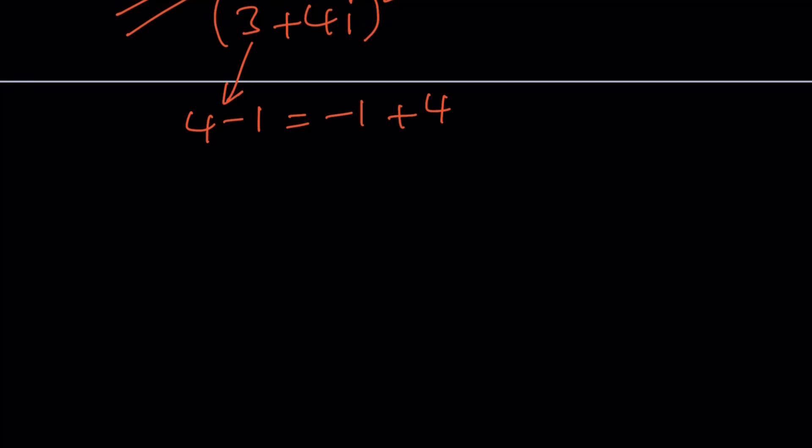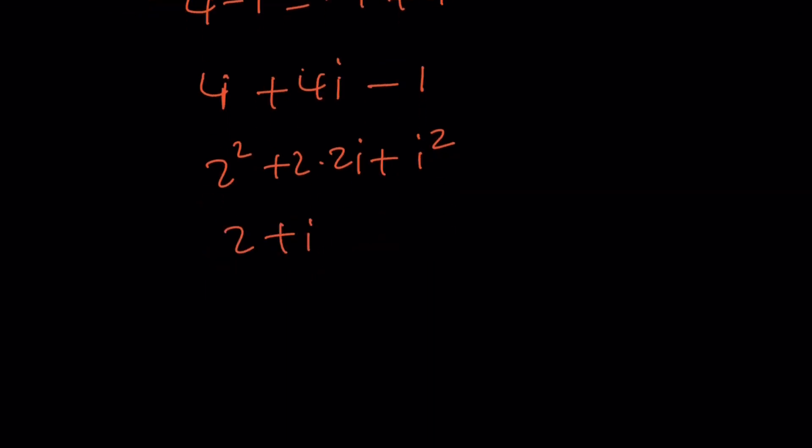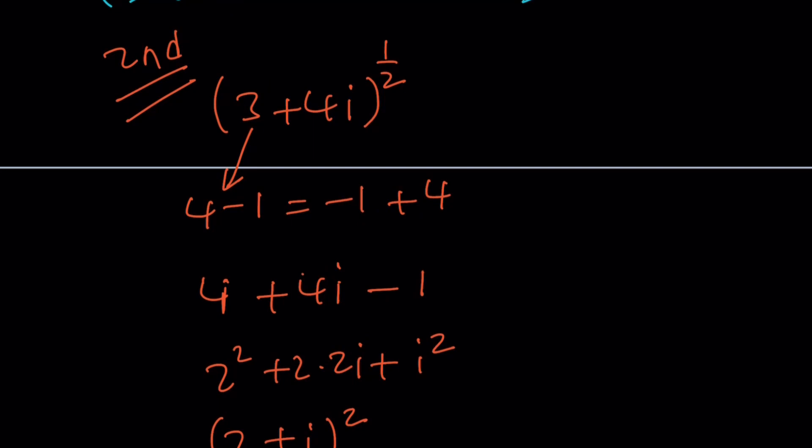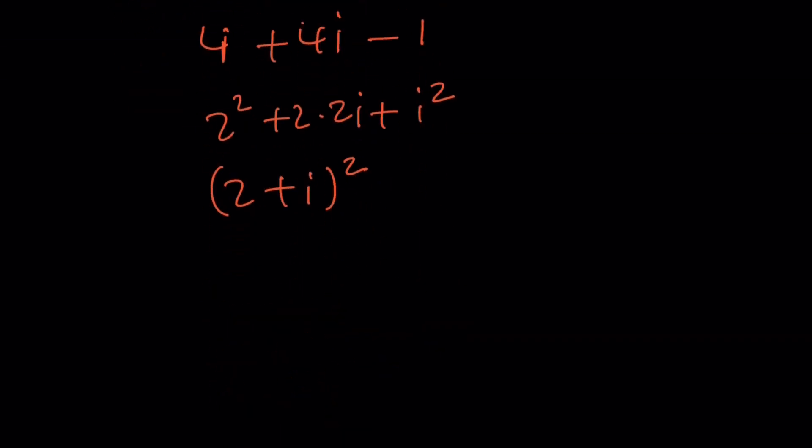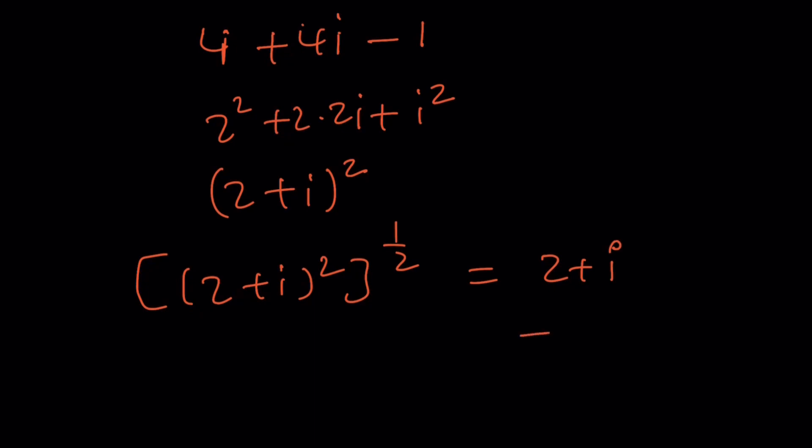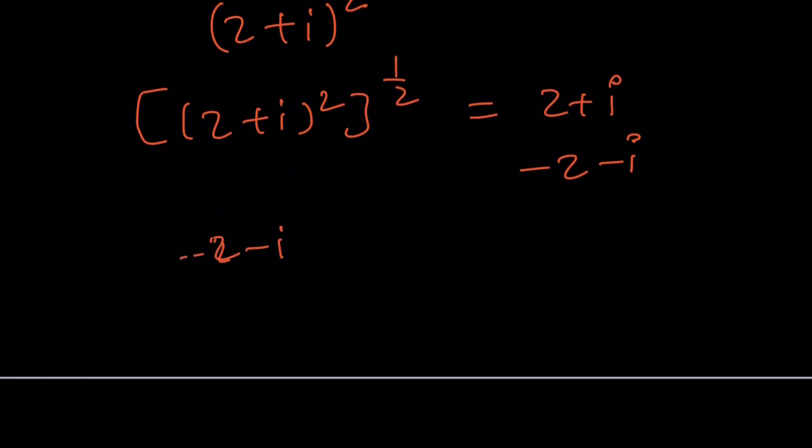So let's go ahead and write it this way. So I'm going to replace the 3 with 4 minus 1. So I'll write this as 4 plus 4i minus 1. And this will become 2 squared plus 2 times 2i plus i squared. And now this will become 2 plus i squared. So if you raise this number to the power 1 half, you're going to get 2 plus i. And of course, negative 2 minus i will also follow because if you square negative 2 minus i, you'll get the same thing.